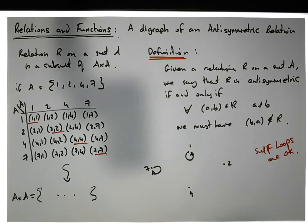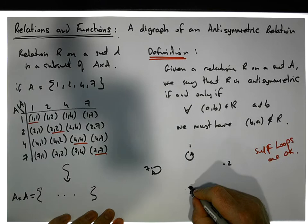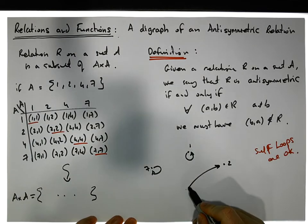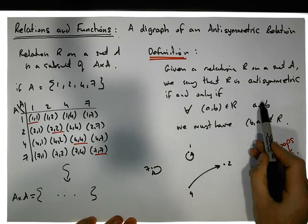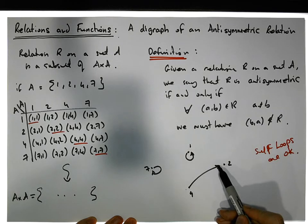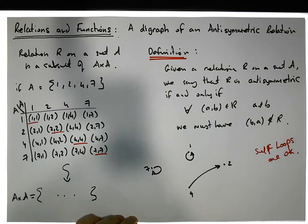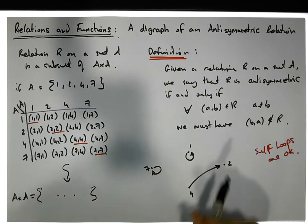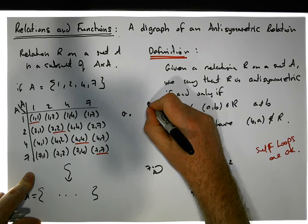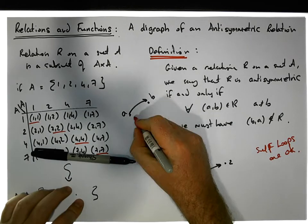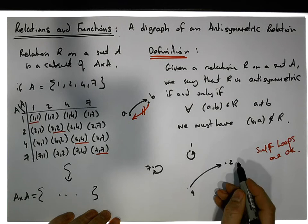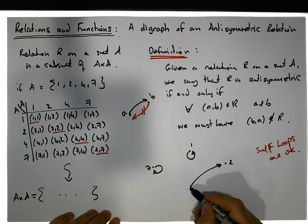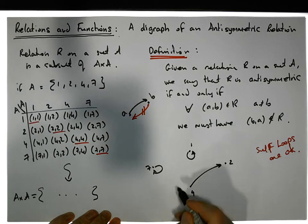Now for the key condition: if 4 is taken to 2 — and 4 is different from 2 — then for anti-symmetry I cannot have 2 going back to 4. In an anti-symmetric relation, if you have an edge from a to b, you cannot have the edge going back from b to a. Self-loops are fine, but a back-edge between two distinct nodes is not allowed. That's what an anti-symmetric digraph looks like.